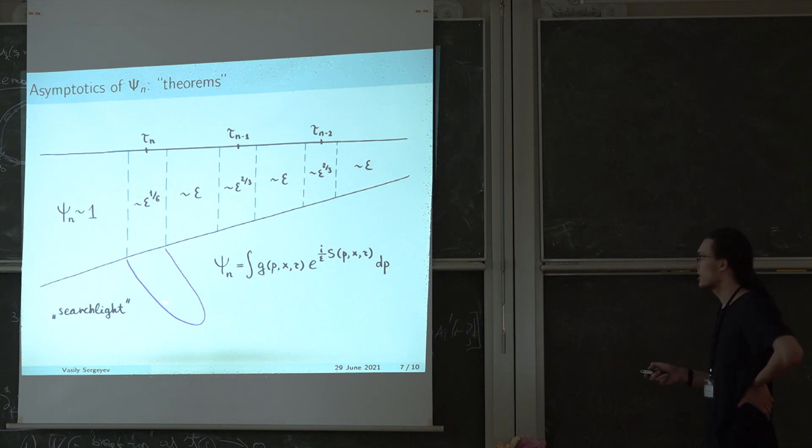Maybe a couple words about the method used. The solution psi n admits an integral representation of the following form. And in the region of interest, the phase function s has two saddle points, which are close to each other and close to a branch point of s.